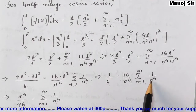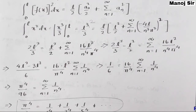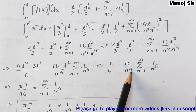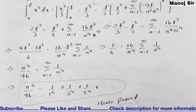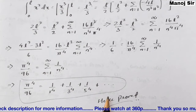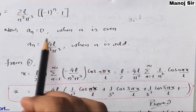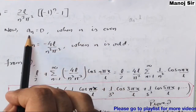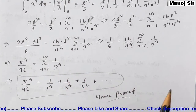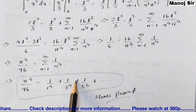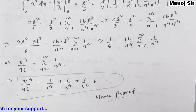Rearranging: Σ(1/n⁴) = π⁴/(12 · 8) = π⁴/96. Since n takes only odd values (even values give aₙ = 0), expanding the summation gives: 1/1⁴ + 1/3⁴ + 1/5⁴ + ... = π⁴/96. This is exactly what was asked in the problem. Thank you.